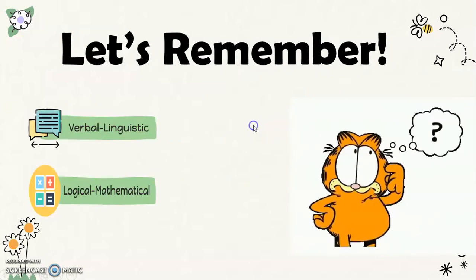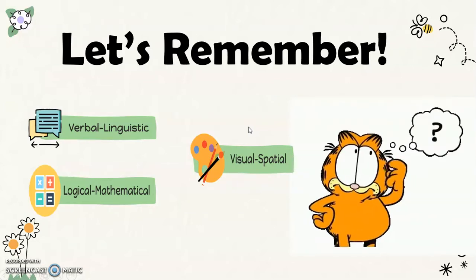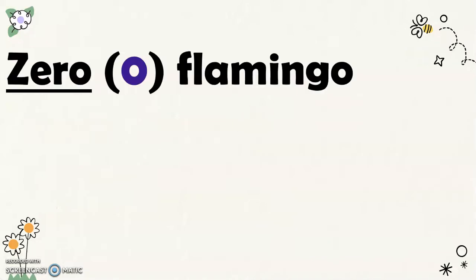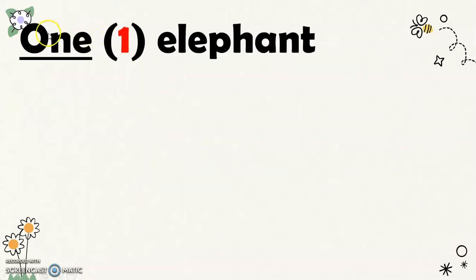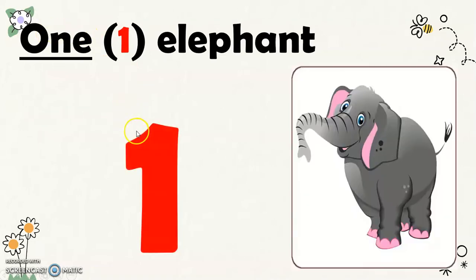Let's remember some of the animals that the children encountered in the zoo, and the animals that they didn't see there. They didn't see the flamingo, so there was zero flamingo in the zoo. This is the number word for zero and this is the number symbol for zero. This is the number word for one and this is the number symbol for one. There was one elephant there.